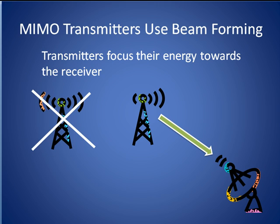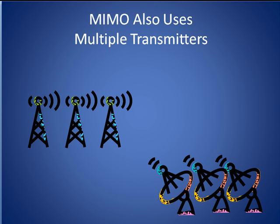Now let's take a look at the transmit side of MIMO. MIMO transmitters use a technology called beamforming to focus their transmit energy towards the receiver. That way, more of the signal gets to the receiver while less is wasted heading in other directions. In addition, as the name MIMO implies, MIMO uses multiple transmitters. These transmitters can simultaneously transmit the same signal, or they can transmit different signals all at once depending on the system configuration. The number of antennae at the receivers is always greater than or equal to the number of antennae at the transmitters, and thus MIMO is able to achieve faster transmission speeds using these techniques.